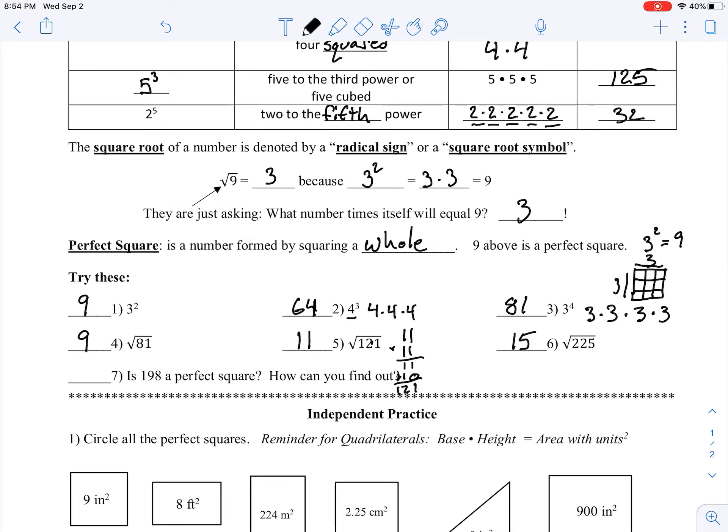So it's asking us, is 198 a perfect square? And how can we find out? So I'm just going to get this old stuff out of the way here. And it is actually not going to be. So we'll say no. And how can we find out? Well, we took 15 squared and that's going to be 225.